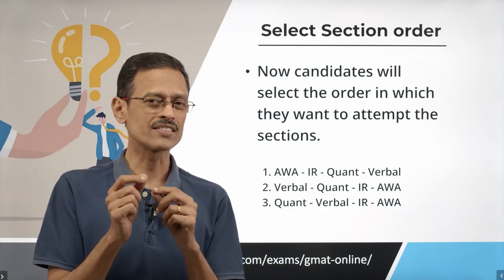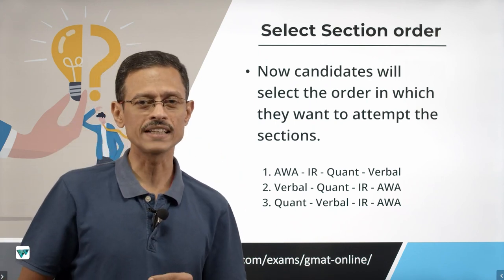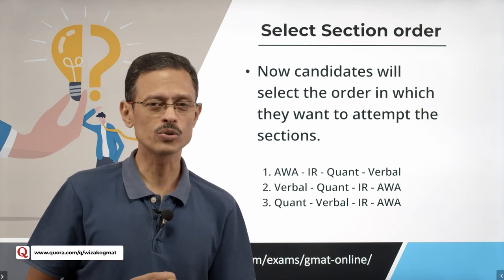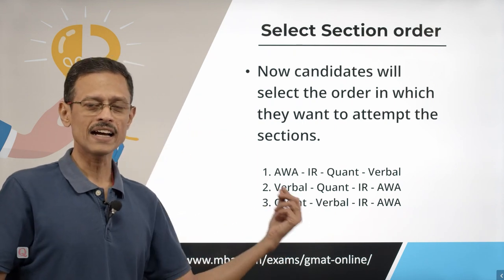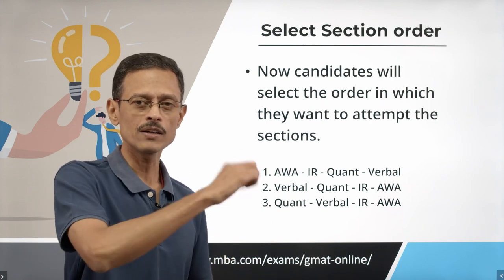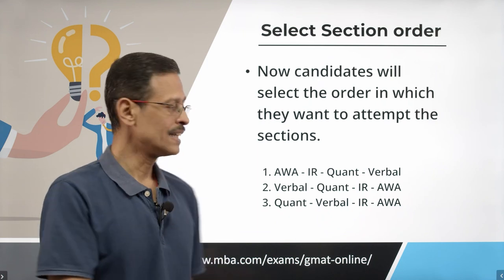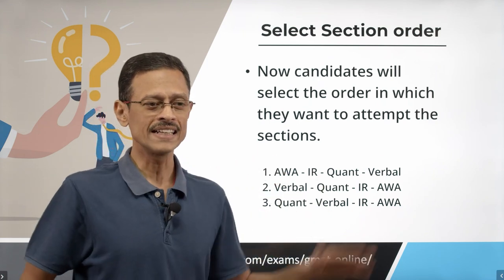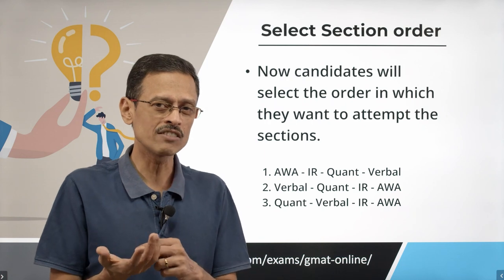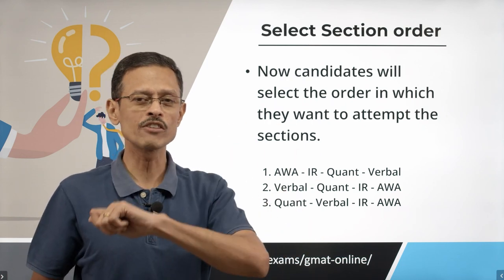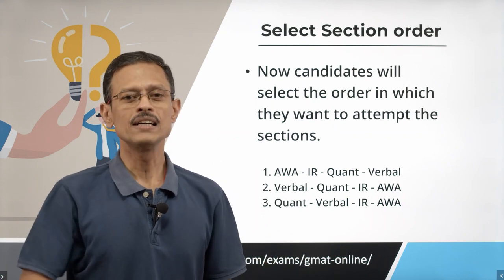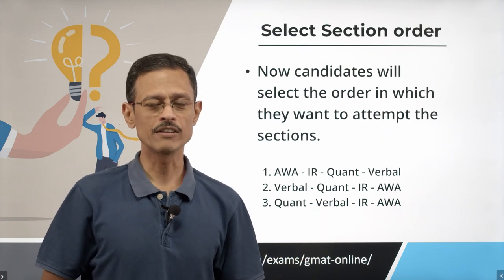The third change: the online version previously gave you a predetermined section order — Quant, Verbal, and IR. The test center based version offered three order options. From April 8th, the online version will also offer the same three choices: the default AWA, IR, Quant, Verbal; or Verbal, Quant, IR, AWA; or Quant, Verbal, IR, AWA. So if you're more comfortable starting with Verbal or Quant, you now have that flexibility in the online version too, making it much closer to the test center based experience.